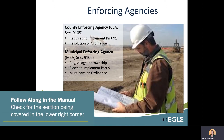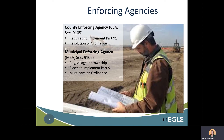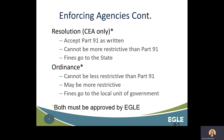CEAs are required to implement Part 91 through either a resolution or an ordinance. If using a resolution, their program must be the same as Part 91. If using an ordinance, their program may be more restrictive than Part 91. MEAs must have an ordinance. All ordinances must be approved by EGLE. A resolution is a document that states the county is going to accept Part 91 as written; all fines go to a location determined by the state, in this case the law library fund. An ordinance may be more restrictive than Part 91, and fines can go to the local agency.